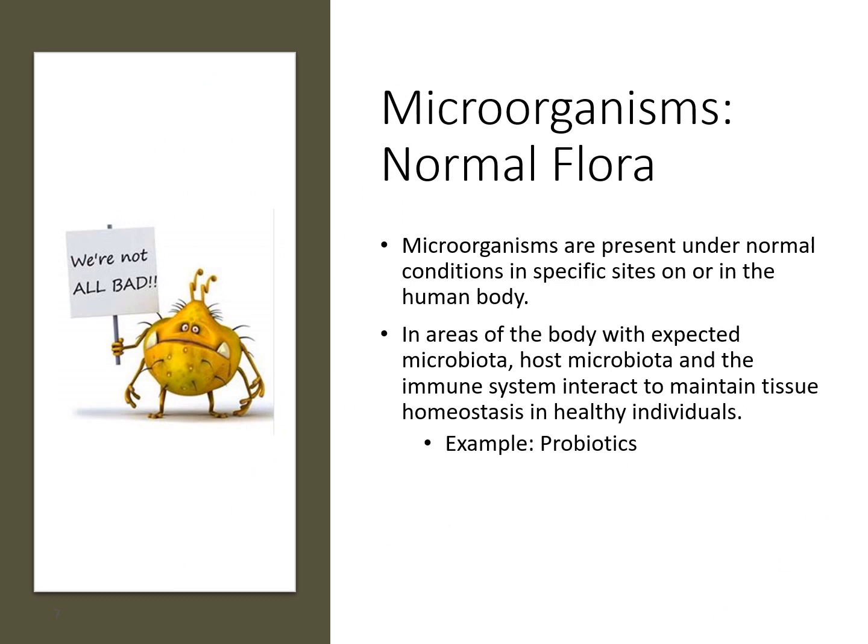Microorganisms can be divided into normal flora and pathogenic microorganisms. Normal flora are organisms that are present under normal conditions in specific sites within or on the surface of the body. In areas of the body with expected microbiota, the host microbiota and the immune system interact to maintain tissue homeostasis. An example of this would be probiotics — the good bacteria in your digestive tract.